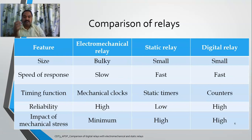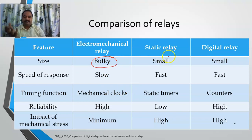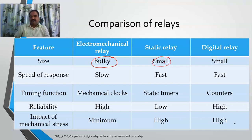Coming to the size of the relay: electromechanical relays are considered bulky because of their bulky components, consuming a large amount of space. Static relays are considered small because they use small semiconductor devices like diodes, transistors, and comparators. Digital relays are not as small as static relays, but when compared to electromechanical relays, they are small enough.